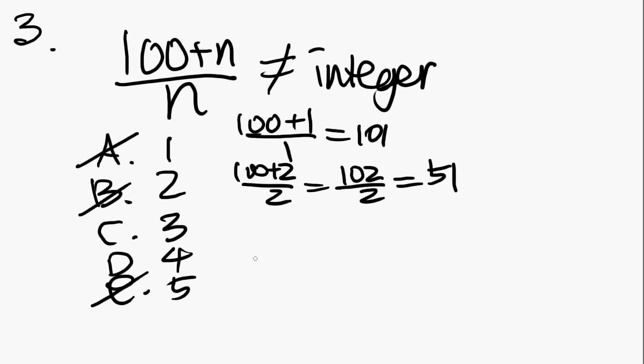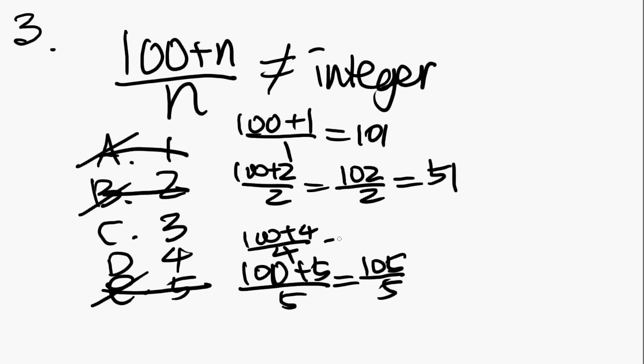It comes down to C and D. Let's do D first. 100 plus 4 over 4, you got 104 over 4. You do a little division. 2 times 4 is 8, that's 24, so that's 6, and that is an integer. So by process of elimination, we know that C is the correct answer.